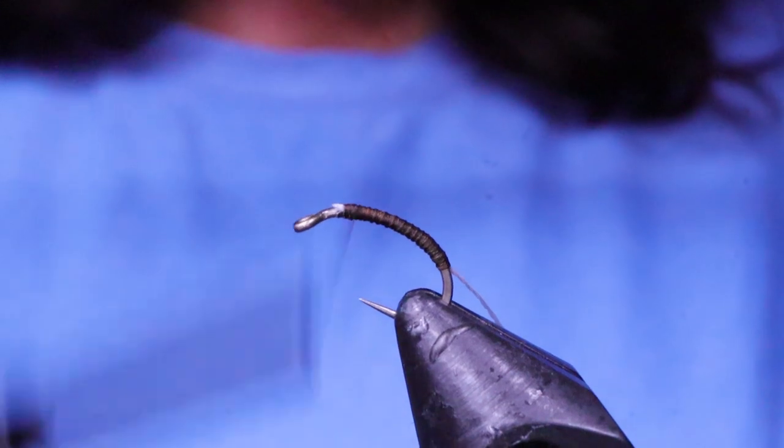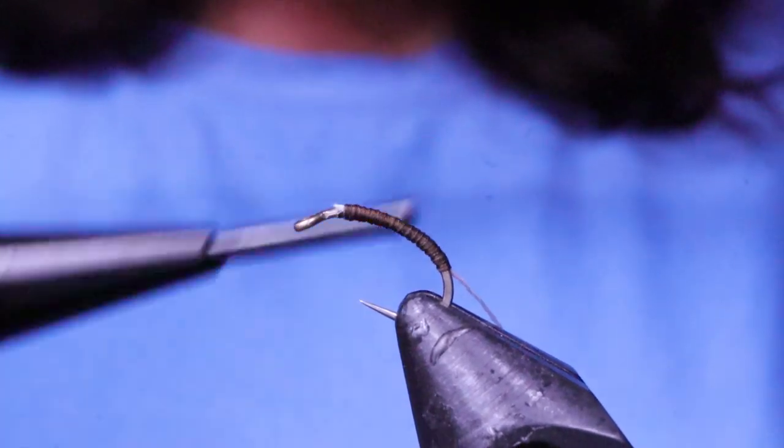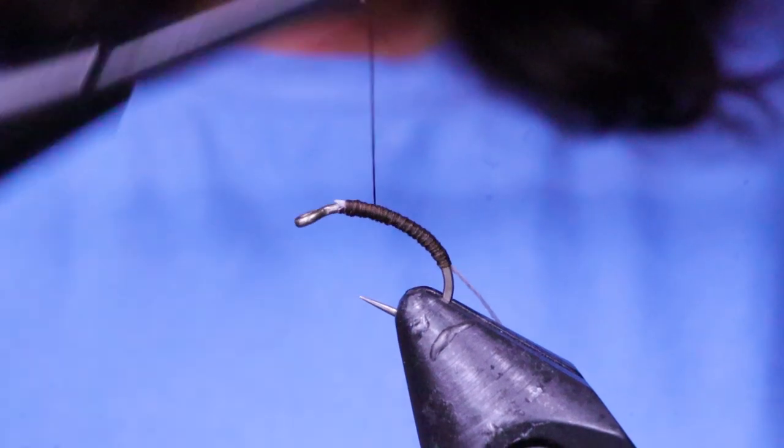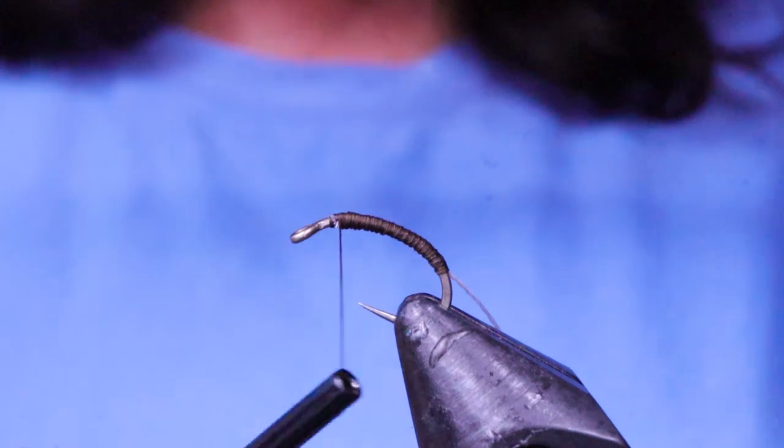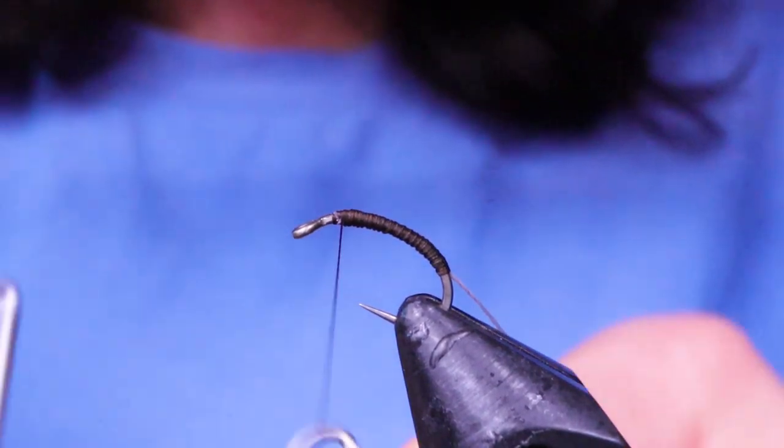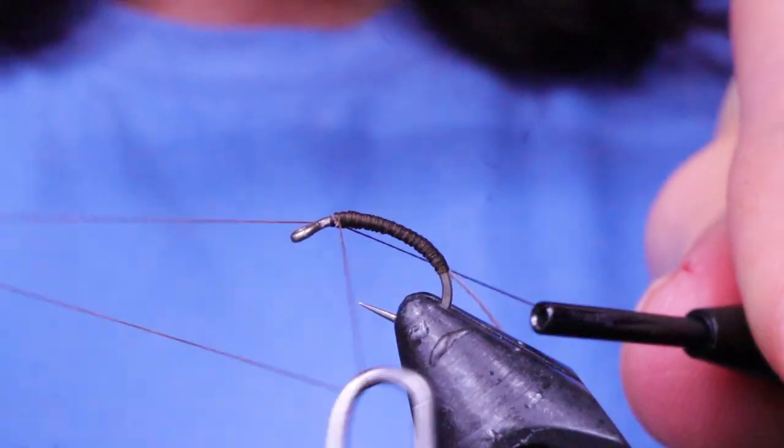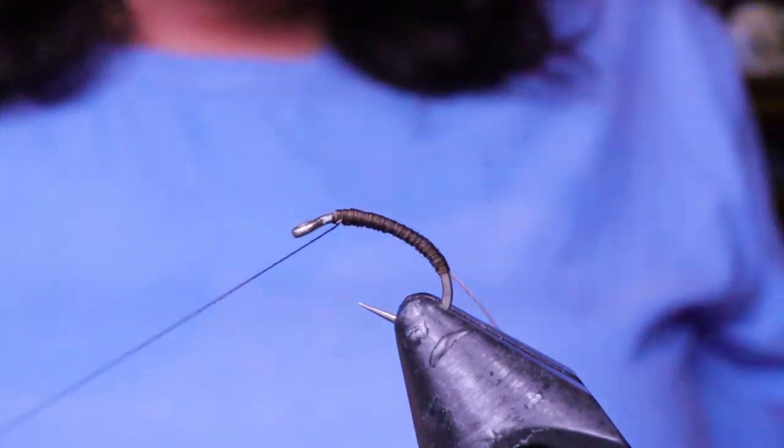And then just bring your thread back up, and I'm just going to go down just a little ways to build a slight taper into this. Hardly even noticeable. And then just get that with a little whip finish or a half hitch. Pull my thread out of the way.